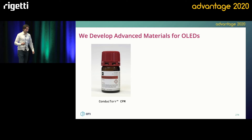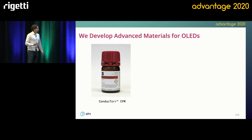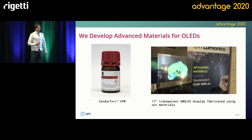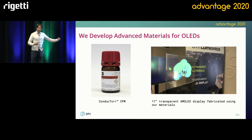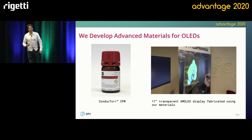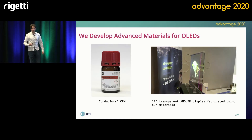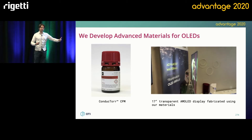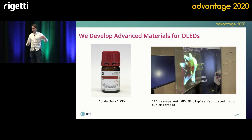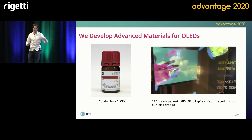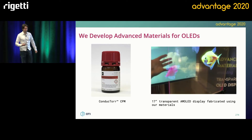Some new products coming out either at the end of this year or next year include transparent TVs. This is actually a transparent TV that OTI fabricated ourselves with our material. This material enables transparent TVs and transparent displays to have approximately 65% to 75% transparency, which is the highest in the industry at this current point in time.